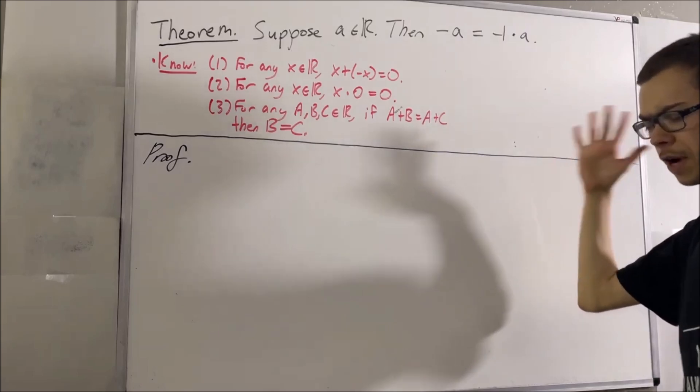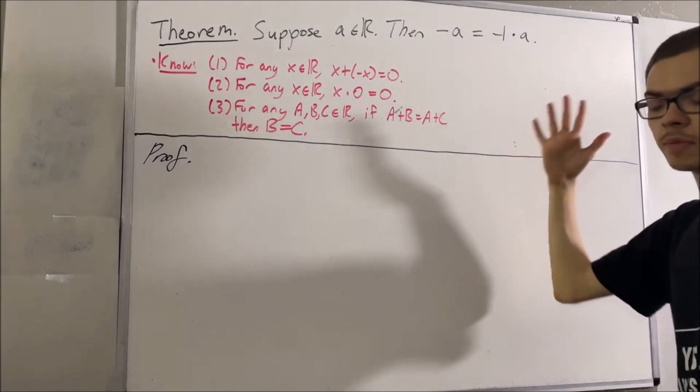Now, the fourth is that, for any real number x, 1 times x is equal to x.